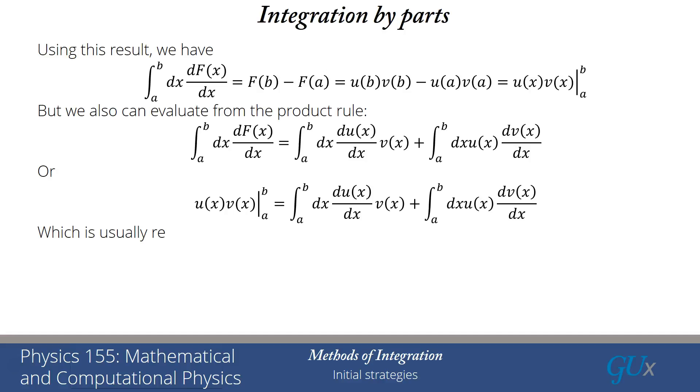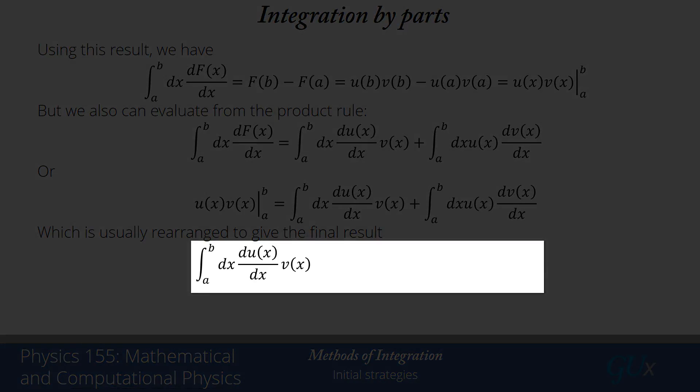Because what we typically do is we now rearrange and bring one of those integrals onto the other side. And what we find then is that the integral dx du(x)/dx · v(x) is equal to u(x)v(x) evaluated between the limits a and b minus the integral from a to b dx of u(x) times dv(x)/dx. And that's what's called integration by parts.